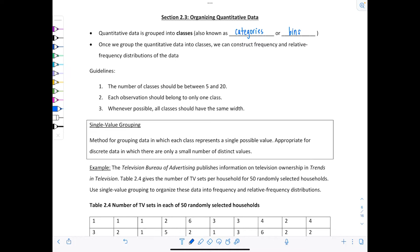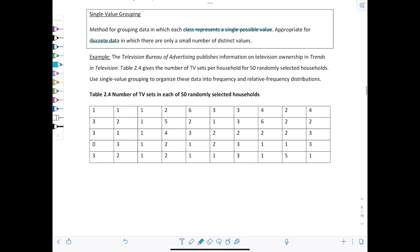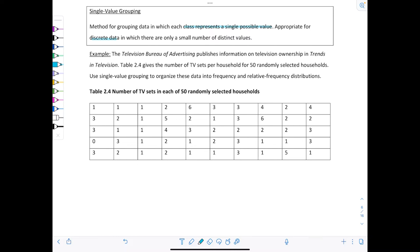The first method is single value grouping. This is a method for grouping data in which each class represents a single possible value. This is good when you have discrete data with only a small number of distinct values. Let's look at an example. The Television Bureau of Advertising publishes information on TV ownership. Table 2.4 gives the number of TV sets per household for 50 randomly selected households. Use single value grouping to organize these data into frequency and relative frequency distributions.